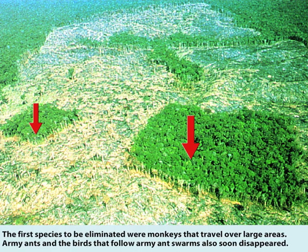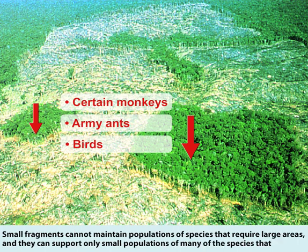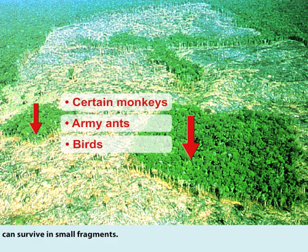The first species to be eliminated were monkeys that travel over large areas. Army ants and the birds that follow army ant swarms also soon disappeared. Small fragments cannot maintain populations of species that require large areas, and they can support only small populations of many of the species that can survive in small fragments.